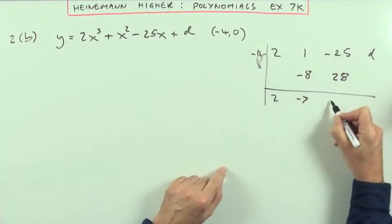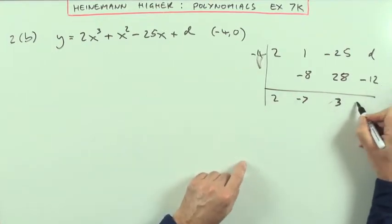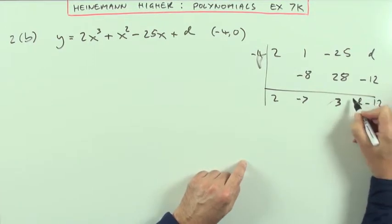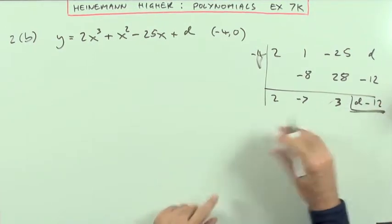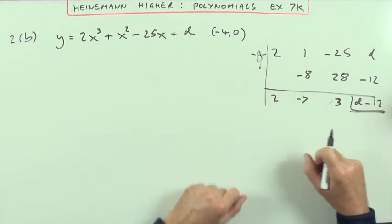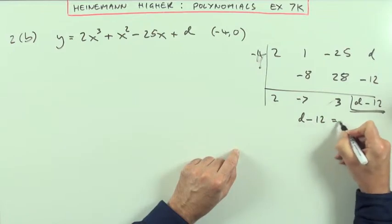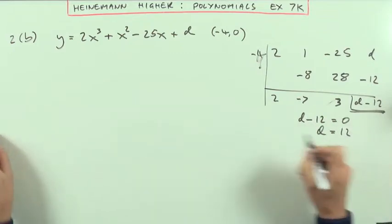Positive 3, multiplying it up, negative 12, adding it down, d minus 12. And then without writing the statements, I know that if that's a root, that should be zero. If I'm dividing by x plus 4, the remainder should be zero. So d minus 12 should be zero, which means d is 12.